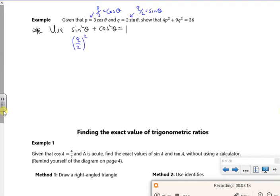So replace the sin with q over 2, so that's q over 2 all squared. So I've got q² over 4 and p² over 9 is 1. If I multiply by 36, which is a common denominator of the bottom,